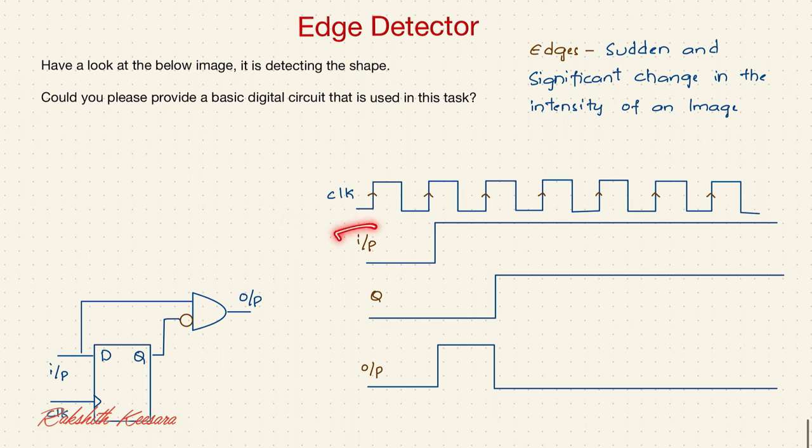I am directly assuming that the input is synchronized with the clock. That means, from this edge to this edge, the value will not change. And from this edge to this edge, the value will not change.